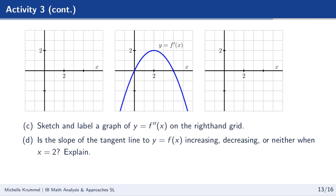Sketch and label a graph for f double prime of x. Since f double prime is the derivative of f prime, I think about slopes of the f prime graph. At x equals 2, the slope of f prime is 0. At x equals 0, the slope looks like 2. Since f prime is quadratic, f double prime is linear, so those two points are enough to sketch the linear graph of f double prime.